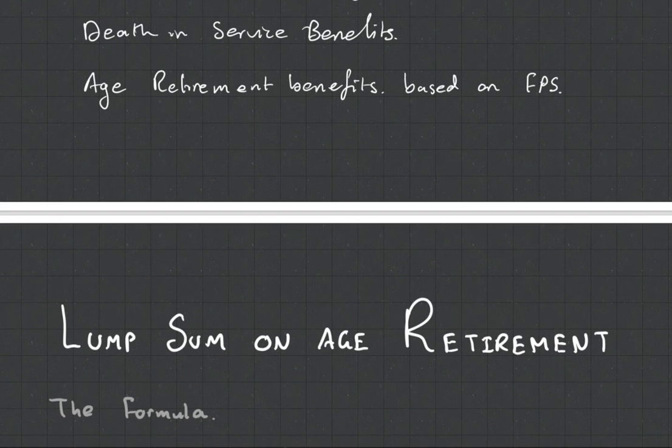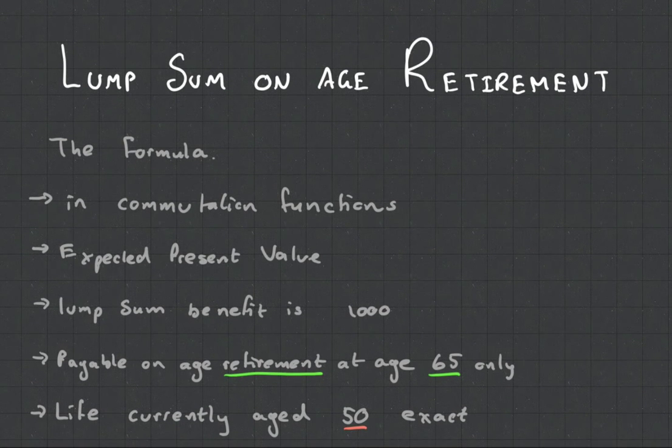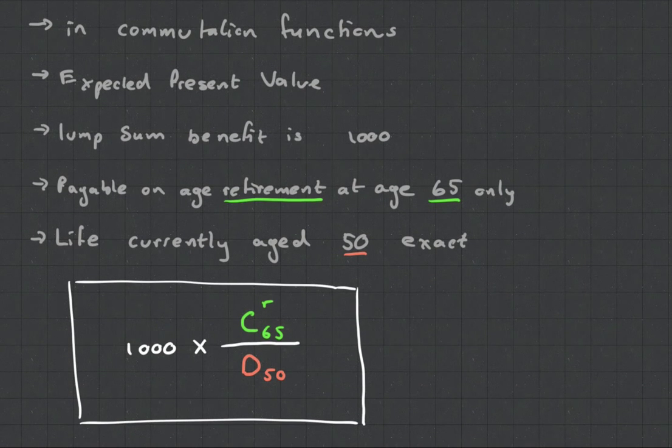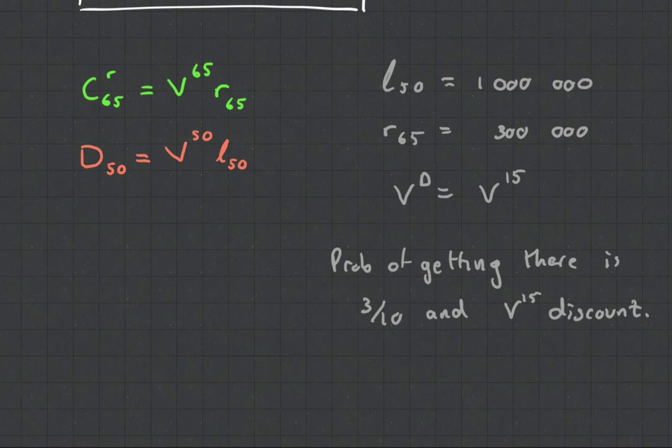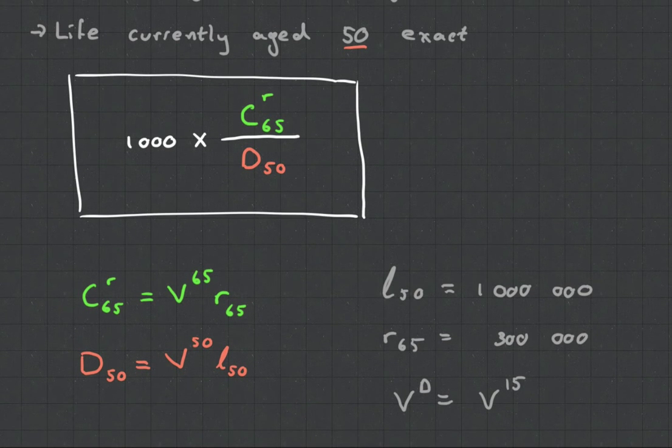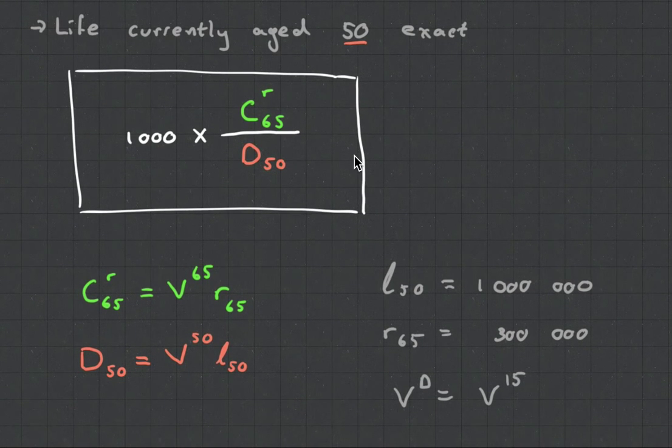The first one is actually quite easy. It's this whole lump sum on age retirement. So when someone retires, they're going to get paid ten thousand dollars. And it's quite simply this formula. Now, we've seen D50 before, but we've never seen the CR65. Now, this is where pensions get a little bit interesting. And that is you get to define this notation as you see fit. So I've defined the C65R to equal this. You'll see later on that we can define it to mean something different. So in pensions, sometimes this is the answer you write down in the test. There's no numbers. This is it. You write down that formula and you define what your commutation functions are.